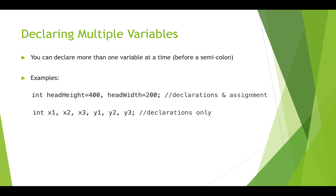You can also declare multiple variables at once to save lines of code. For example: 'int headHeight = 400, headWidth = 200;' — both on the same line, type specified once, separated by a comma. You couldn't combine different types this way. You can also create multiple empty boxes: 'int x1, x2, x3, y1, y2, y3;' — this creates six empty boxes in memory with no values assigned yet.